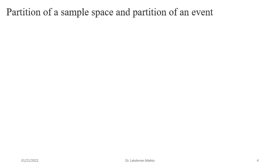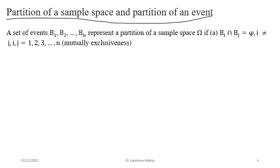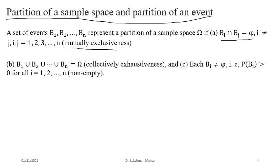In order to discuss total probability, we first need to discuss partition of the sample space, and that partition also leads to partition of any event. Consider a partition of sample space having members B1, B2, ..., Bn defining a partition of sample space Omega. The meaning of partition is that each member must be mutually exclusive — pairwise mutually exclusive — with respect to others.